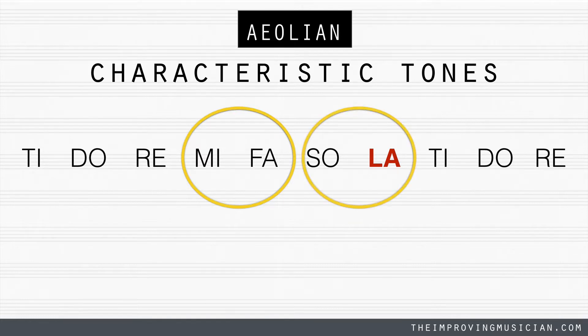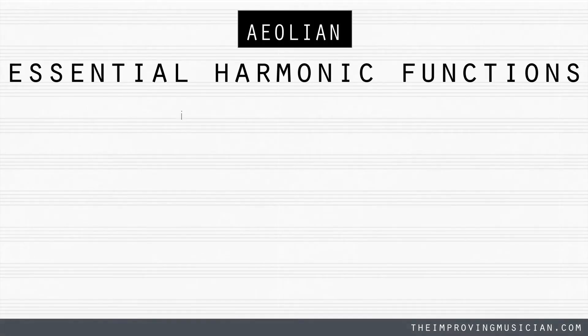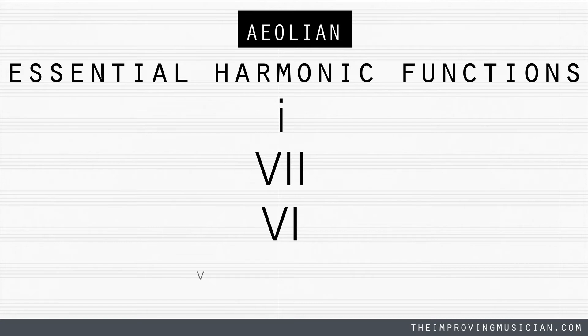You often hear this kind of progression in Aeolian: a I chord, a VII chord, a VI chord, and a minor V.